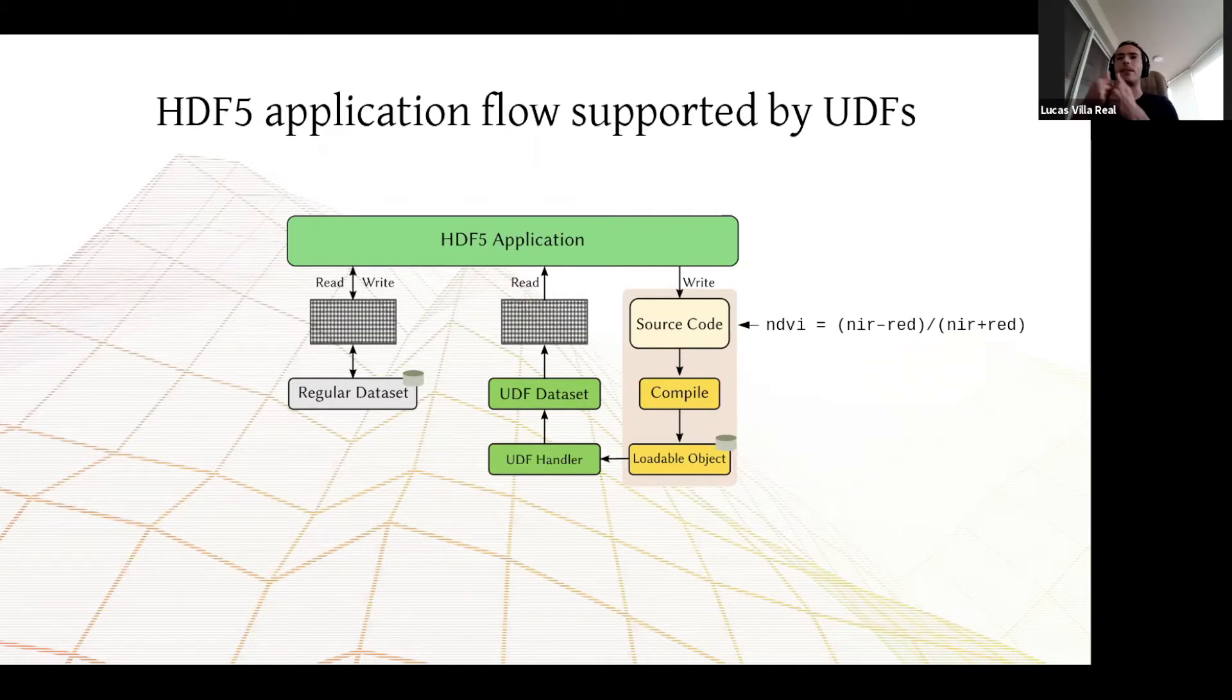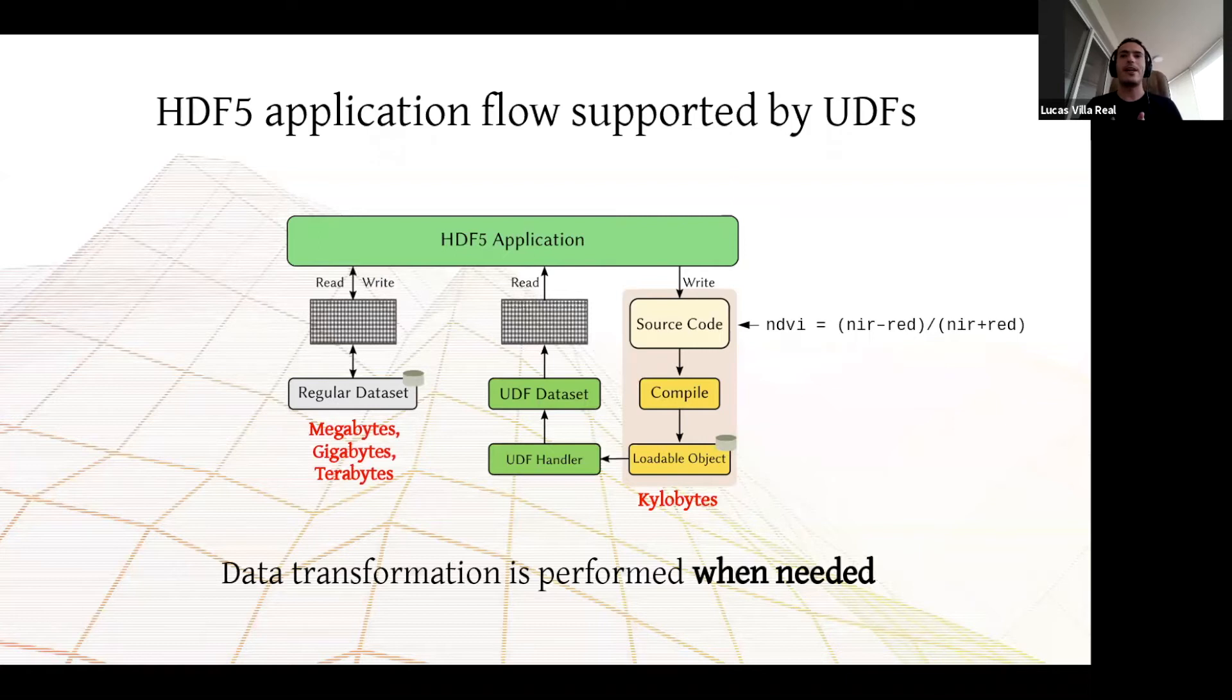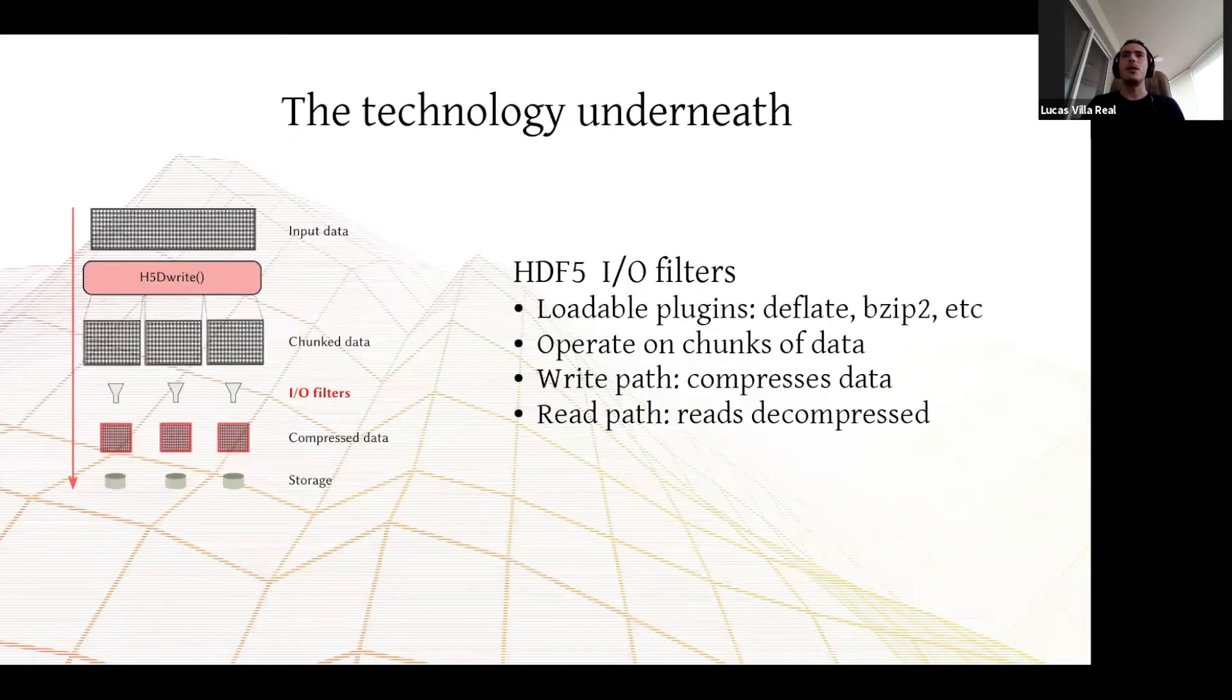Given this context, I would like to present you user-defined functions for HDF5 and how it applies to what I just mentioned. A traditional application flow using HDF5 files provides numerical grids to the API. When writing those grids, it passes the grid which goes to disk. When the application requests to read the data back from disk, just the opposite happens. You get the data from disk, you instantiate that as a volume dataset, and you provide the result to the application.